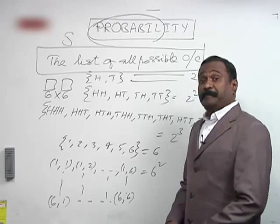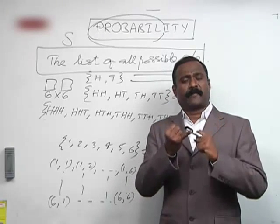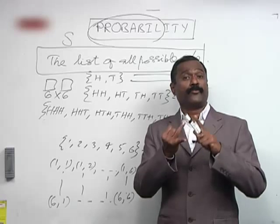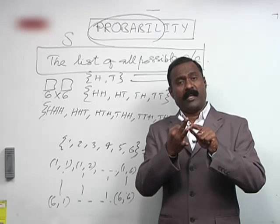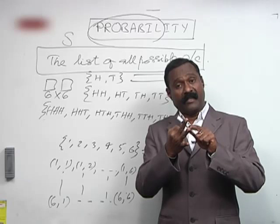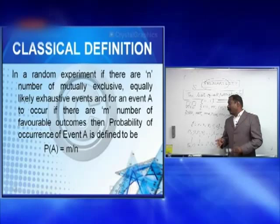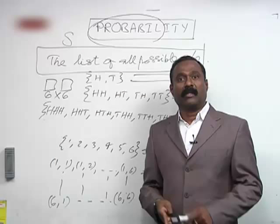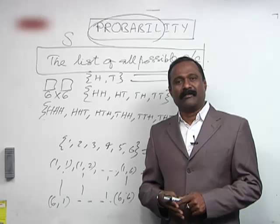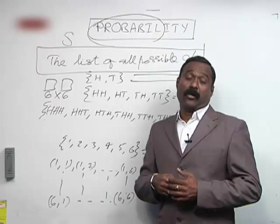The terms we have seen so far are: random experiment, mutually exclusive events, equally likely events, simple event and compound event, and finally — which is very, very important — the sample space or exhaustive events, which is the list of all possible outcomes.